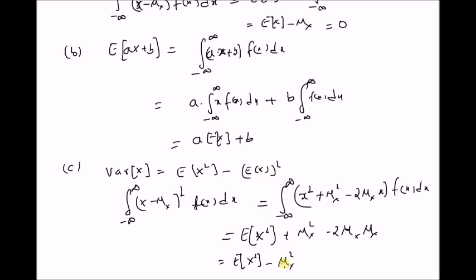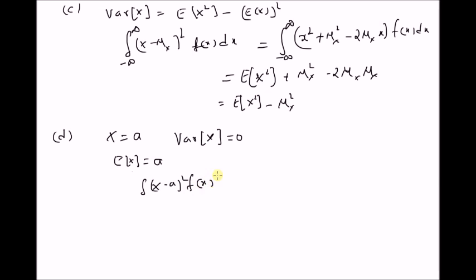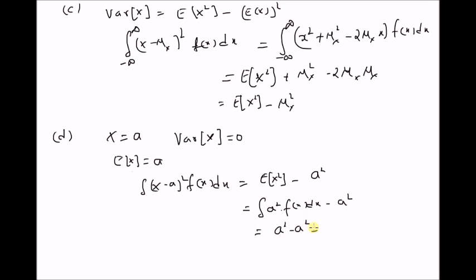Since μx equals E[X], this theorem is proved. The next property is: if X is a deterministic constant a, then Var(X) equals 0. This is obvious because if X equals a, then E[X] equals a, so μx equals a. Therefore, the variance from the definition equals the integral of (x minus a)² f(x) dx, which gives E[X²] minus a². But E[X²] equals the integral of a² f(x) dx, which equals a². So the variance is a² minus a² equals 0 — a deterministic value always has zero variance.